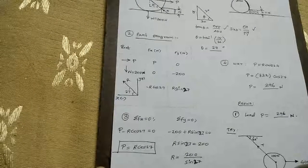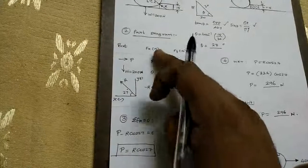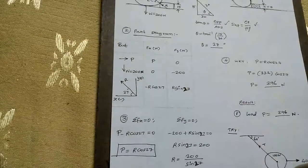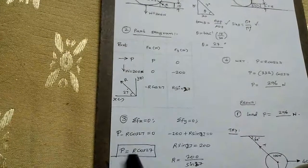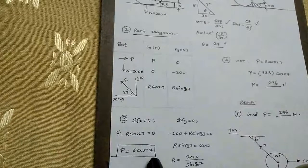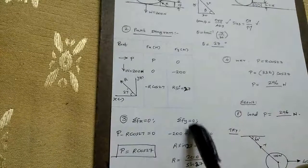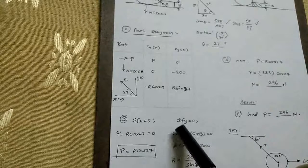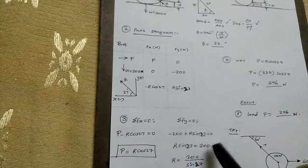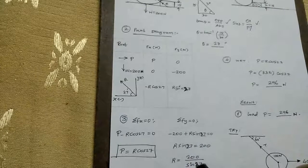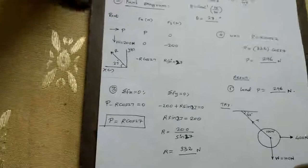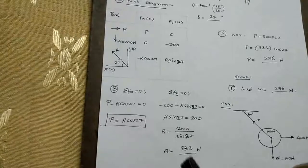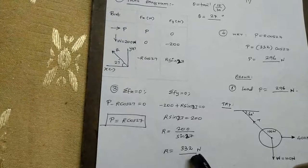Applying equilibrium ΣFx = 0: P minus R cos 27 equals 0, so capital P equals R cos 27. Applying ΣFy = 0: minus 200 plus R sin 27 equals 0, so R sin 27 equals 200. Therefore R equals 200 divided by sin 27, which gives R equal to 440 approximately.